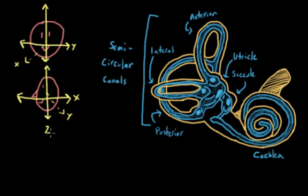And each of our semicircular canals actually lines up with one of these axes. Each of these canals is filled with a fluid that's known as endolymph. And when we rotate along a certain plane, it causes the endolymph to shift within that particular semicircular canal.